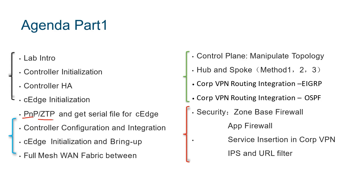During the device onboarding process, there is also something called a serial file, which we can consider as our C-Edge's whitelist. On the internet, it's a very important security aspect — only our legitimate C-Edges can integrate with our controllers. This is achieved through a whitelist, which is our serial file.